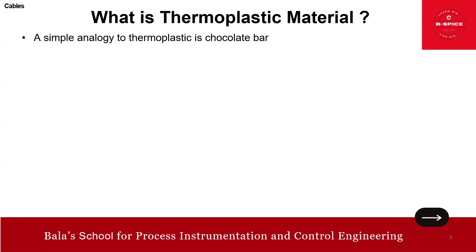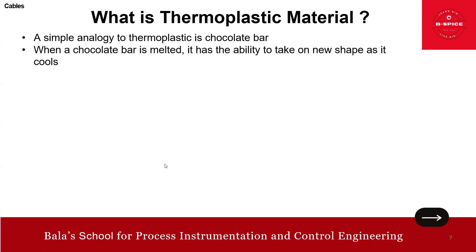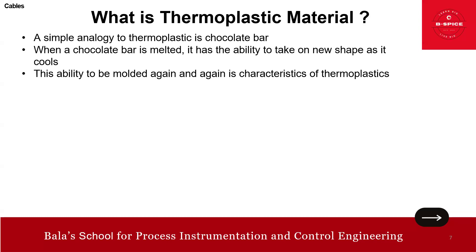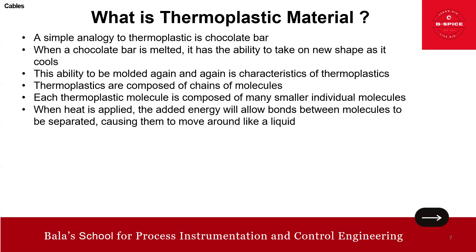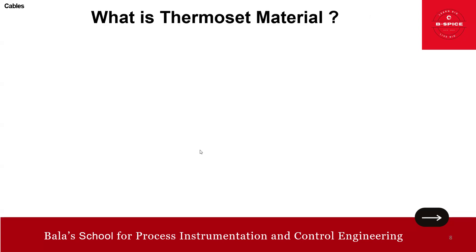A simple analogy to visualize thermoplastic: it's like a chocolate bar. When a chocolate bar is melted, it has the ability to take a new shape as it cools. This ability to be molded again and again is a characteristic of thermoplastics. Thermoplastics are composed of chains of molecules — each thermoplastic molecule is composed of many smaller individual molecules. When heat is applied, the added energy allows bonds between molecules to be separated, causing them to move around like a liquid.